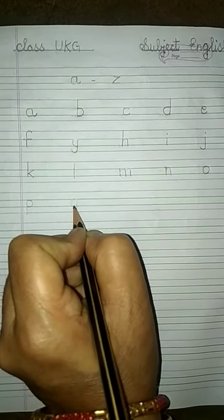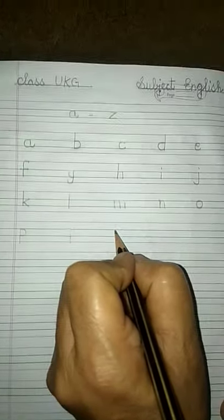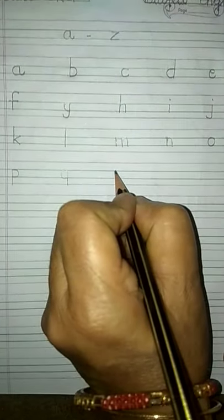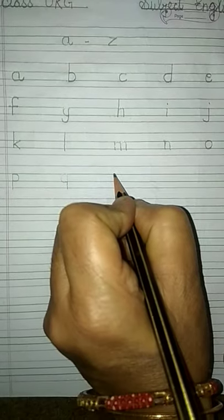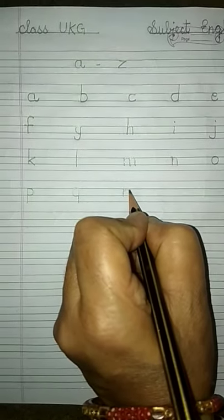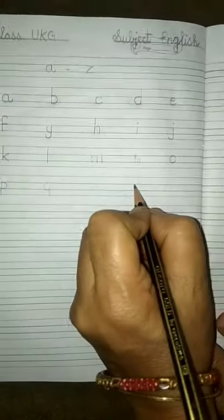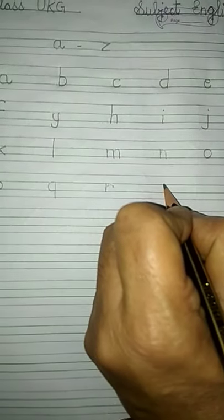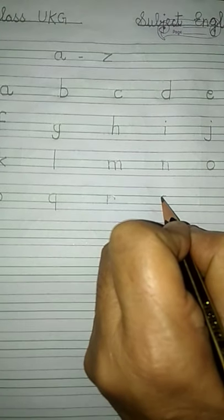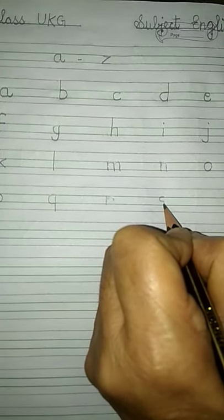R — one standing line in between the two blue lines and one small curve from the middle: R. S — in between the two blue lines, one small curve to the right, another small curve to the left: S.